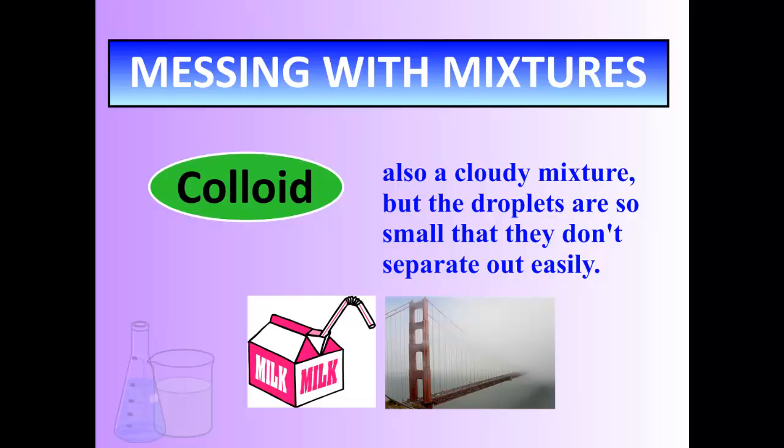The last type, more difficult to imagine, is something called a colloid. It's a cloudy mixture that has droplets of something inside the main substance, but they don't separate out very easily — those droplets just kind of hang around and sit there. An example would be fog: you have droplets of water within the air that can't really be separated out easily. Milk is another great example of a colloid.